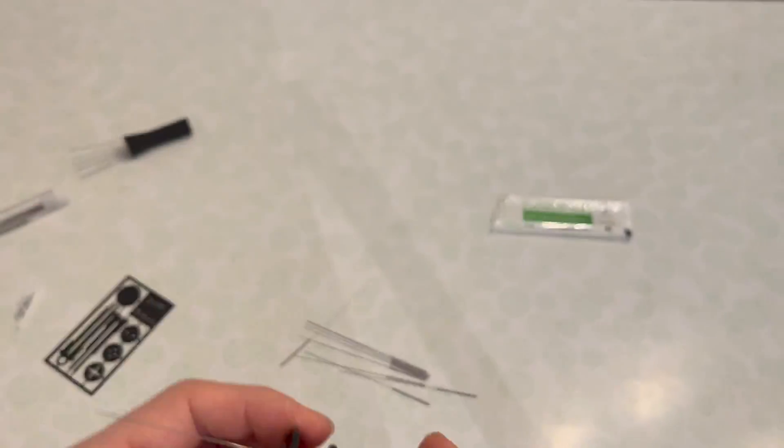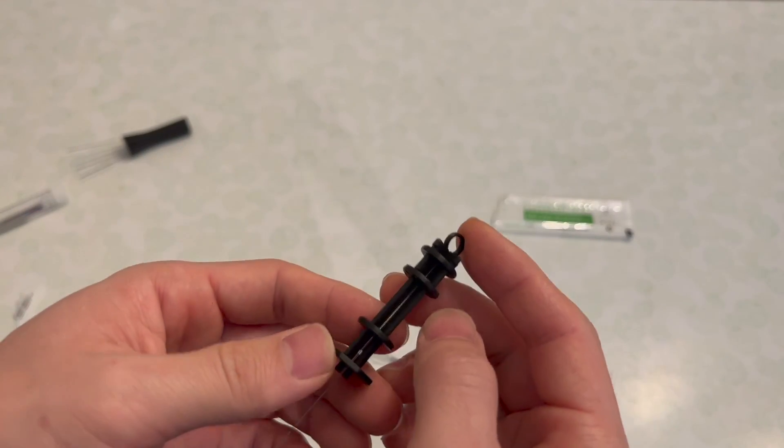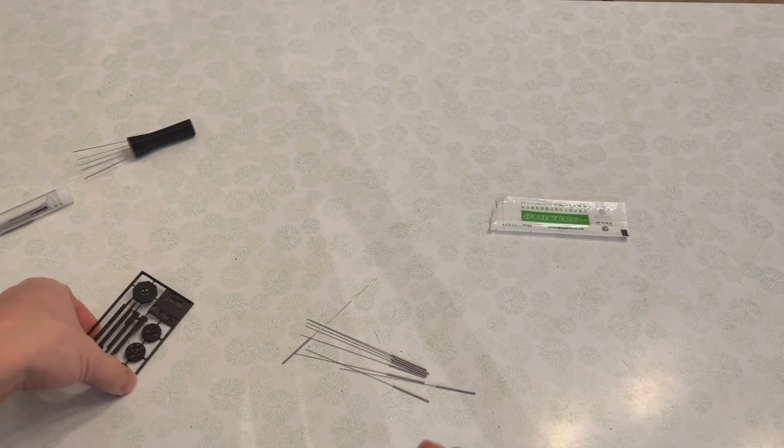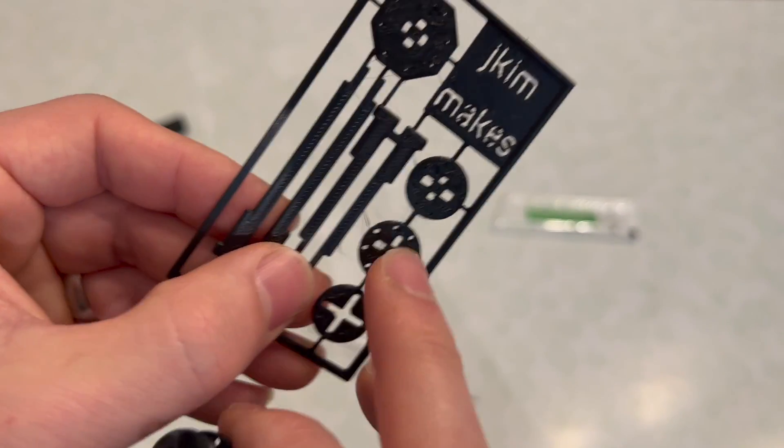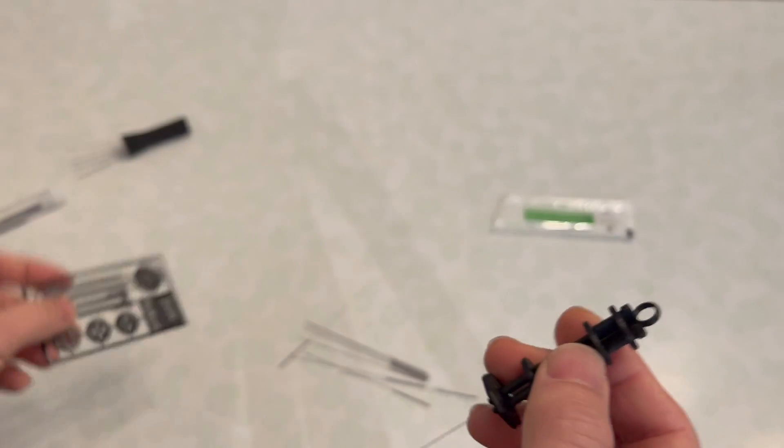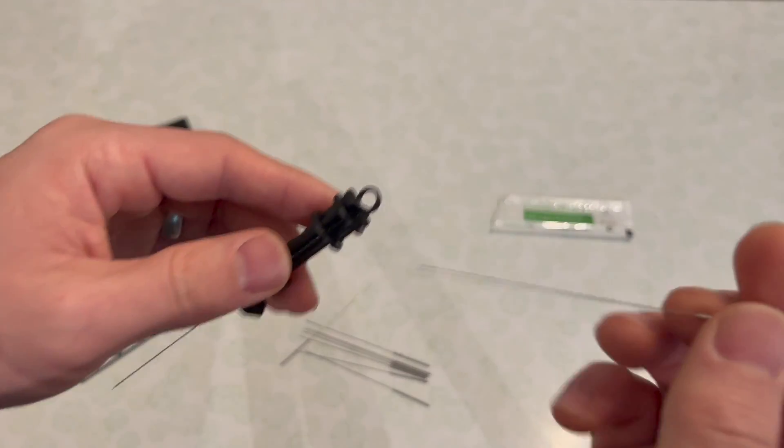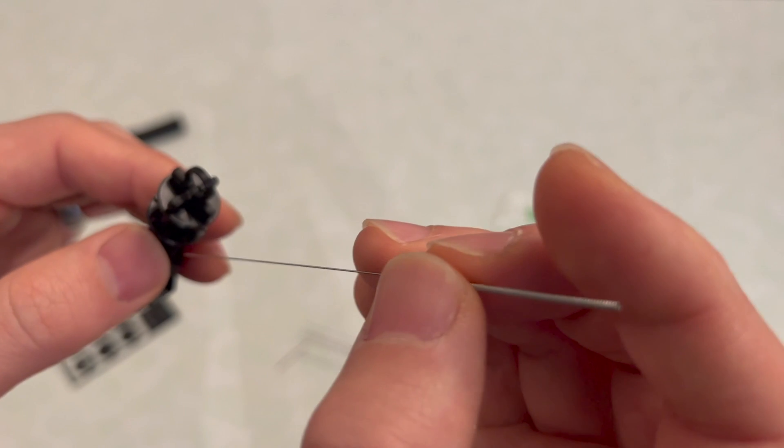The next thing you want to do is install the needles along the side. There are larger holes and there are smaller holes. This middle piece here has larger holes, so what you want to do is take this needle and put it through one of these larger holes. Then grab a pair of tweezers.